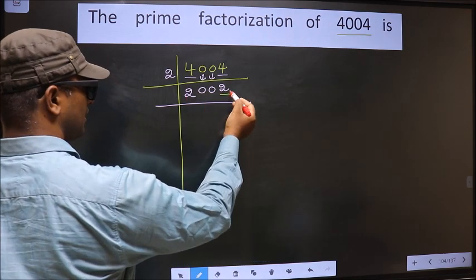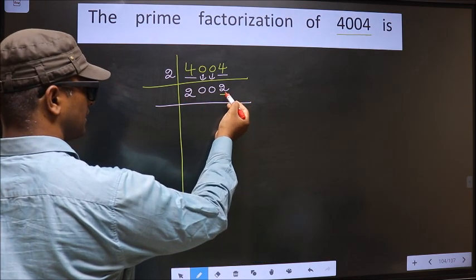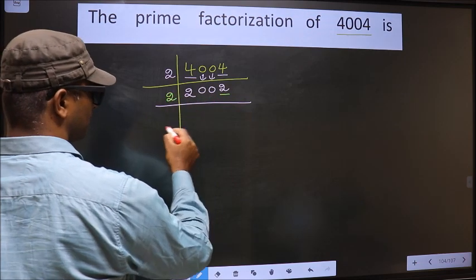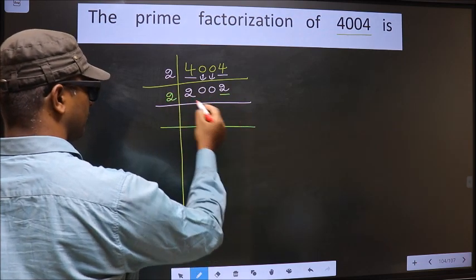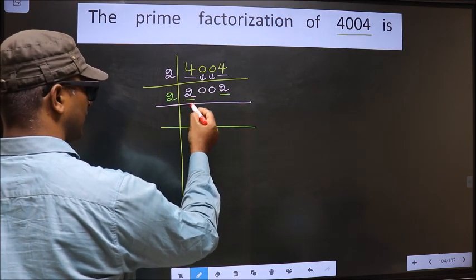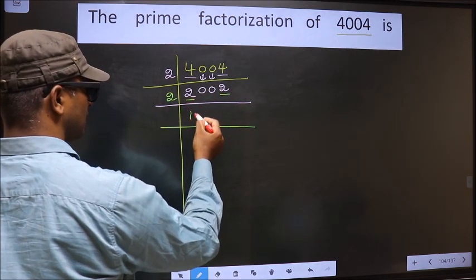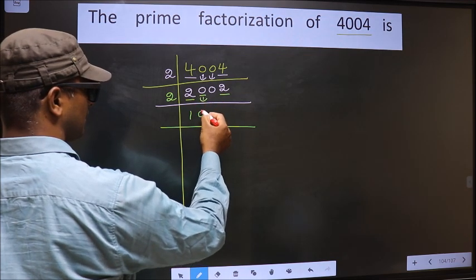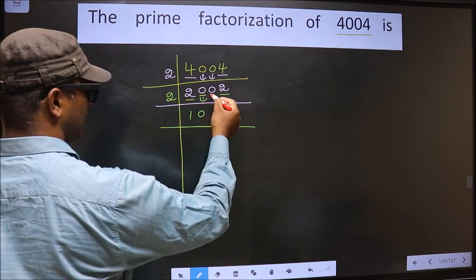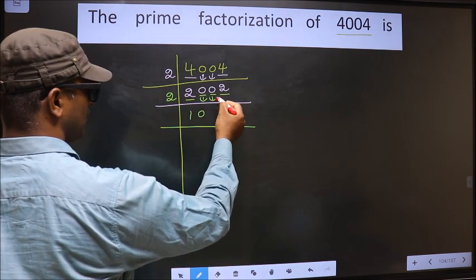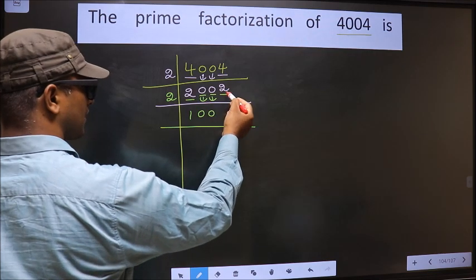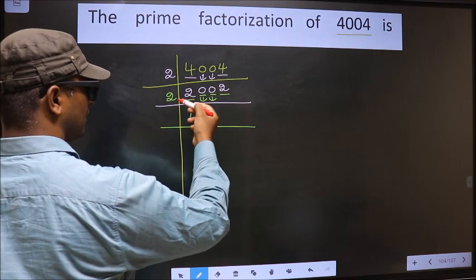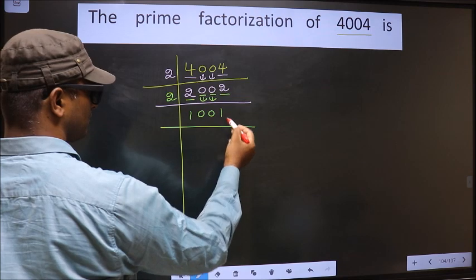Now for this number 2002, the last digit is 2, which is even. So we take 2 here. The first number is 2 — when do we get 2 in the 2 table? 2 times 1 is 2. The other digits, 0 and 0, come down as they are. Next number 2 — 2 times 1 is 2. So 2002 ÷ 2 = 1001.